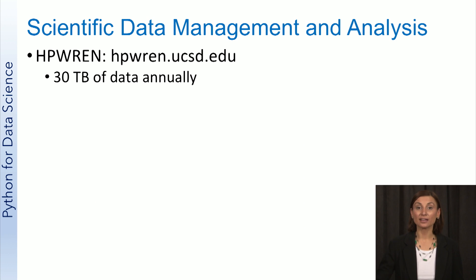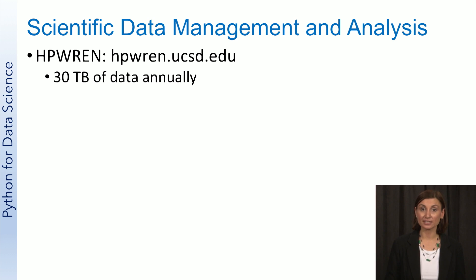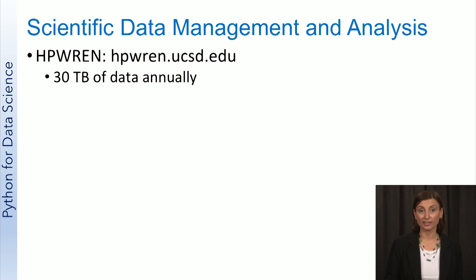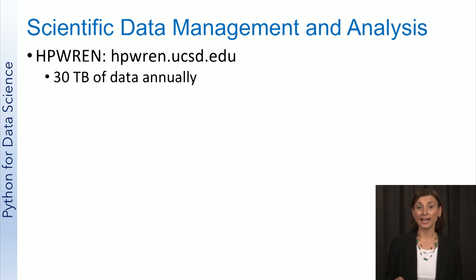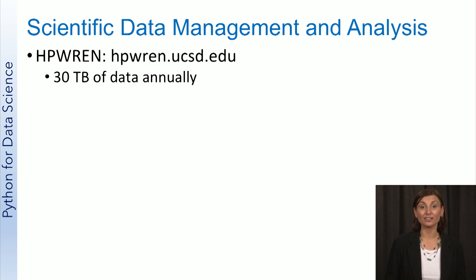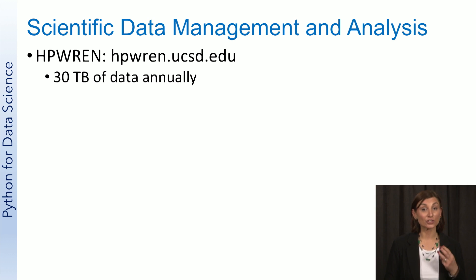HPWREN, the high-performance wireless research and education network that connects sensors in San Diego, Riverside, and Imperial counties, collects 30 terabytes of data annually. We use HPWREN data collected from weather stations throughout San Diego County for wildfire monitoring and modeling. This consists of a daily amount of half a gigabyte of environmental sensor data and 4 gigabytes of camera data throughout 18 stations. This may not sound like a lot, but this is just one system for three counties.